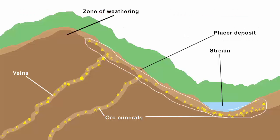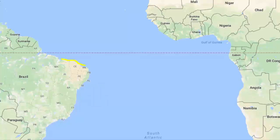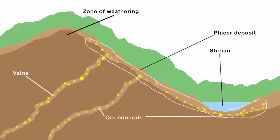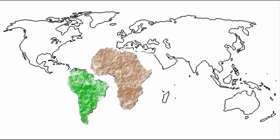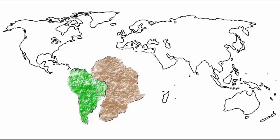The fourth point in continental drift theory talks about placer deposits — deposits of rich minerals like gold and diamonds. If you look at the coast of Ghana and the coast of Brazil, you will see that these placer deposits look like a vein that were once joined together. This again made Wegener believe that Africa and South America were once a single land mass.